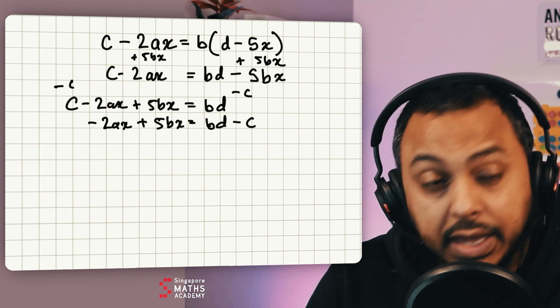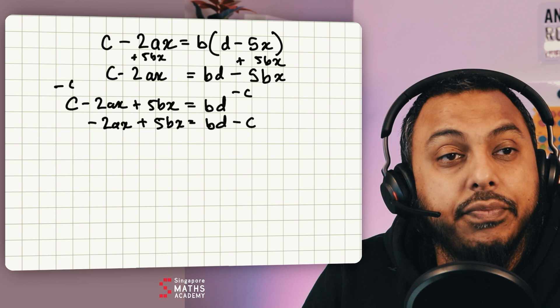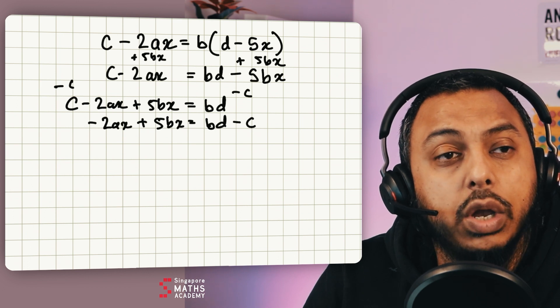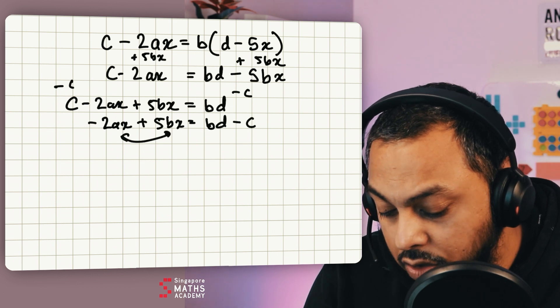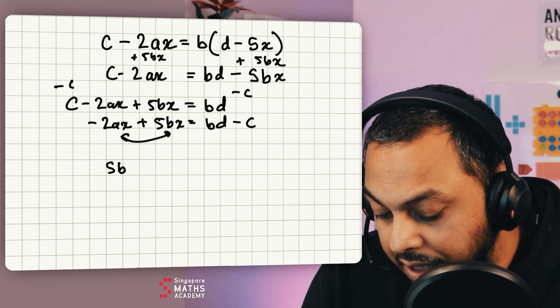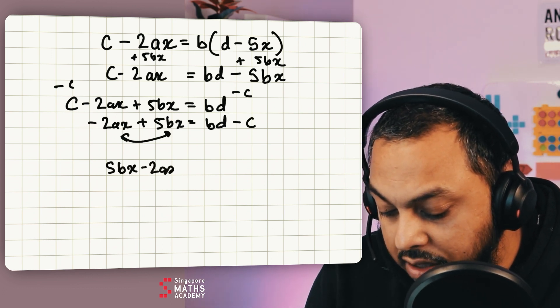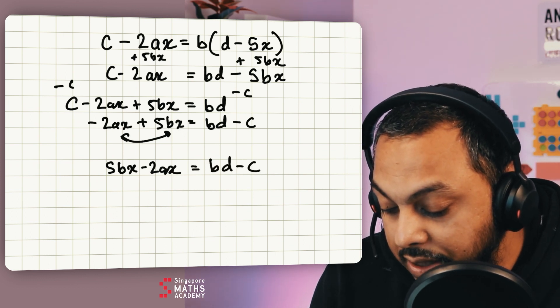Okay then finally, or penultimately, we're going to have to factorize. I'm going to just rearrange this so it just becomes 5bx take away 2ax, you don't have to do that, is equal to bd take away c.